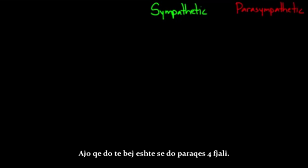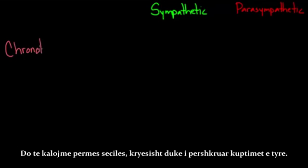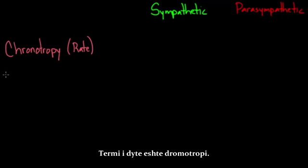I'm going to lay out four words and go through them one by one, describing what they mean. The first is chronotropy, which refers to heart rate. The second term is dromotropy, which has to do with conduction velocity.